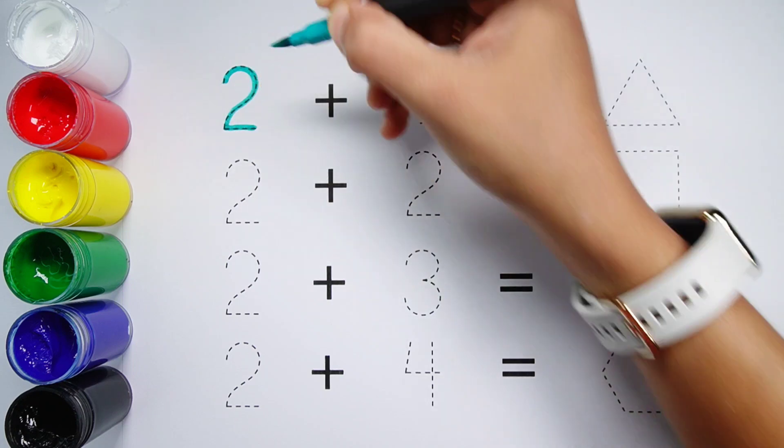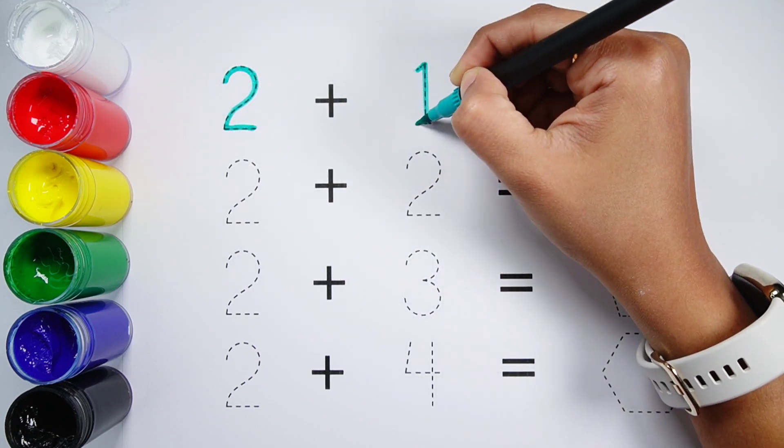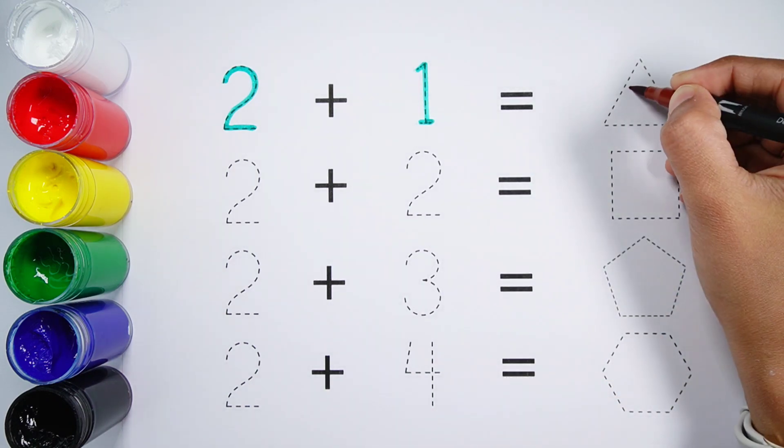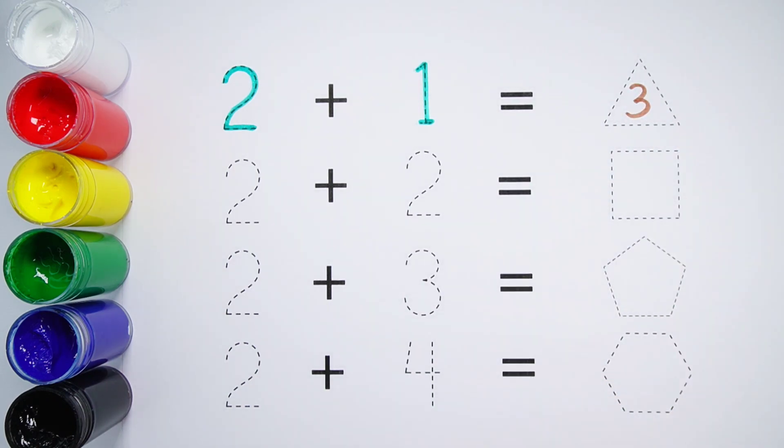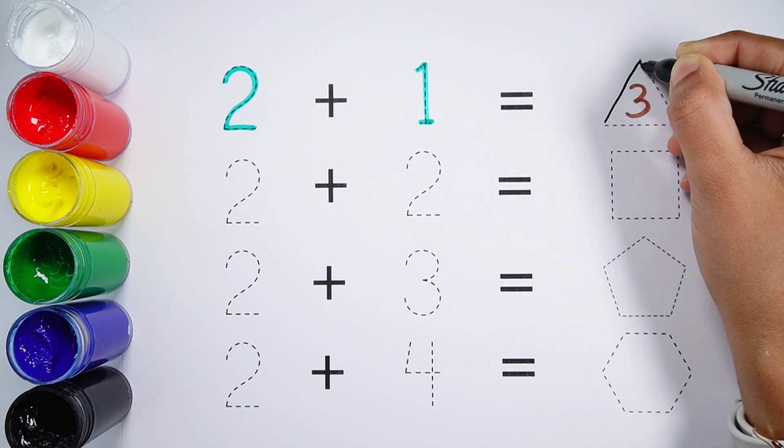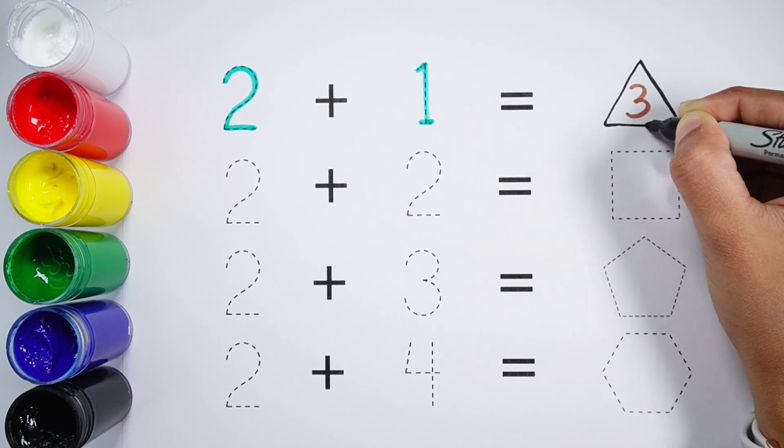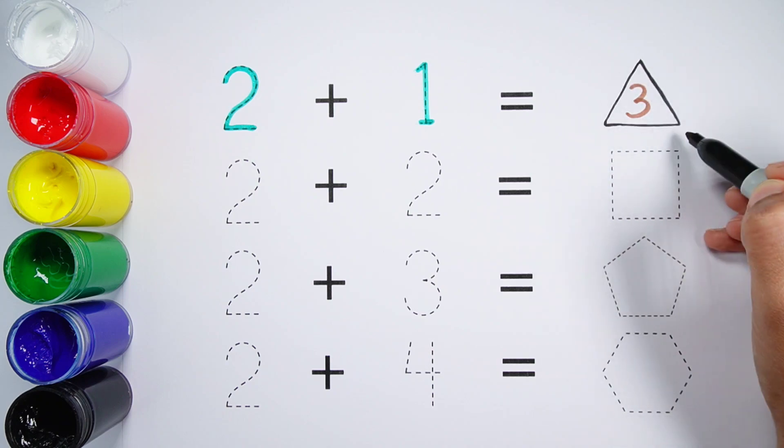2 plus 1 equals 3. A three-sided triangle.